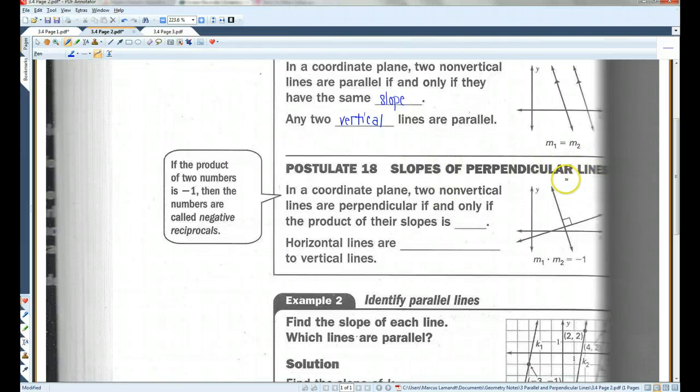Slopes of perpendicular lines. Hopefully, you remember from algebra. If you have perpendicular lines, they have opposite reciprocal slopes. In a coordinate plane, two non-vertical lines are perpendicular if and only if the product of their slopes is negative one. Now, opposite reciprocals are also called negative reciprocals. Opposite means that you change the sign.